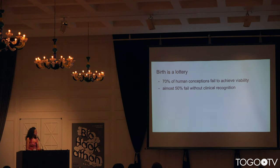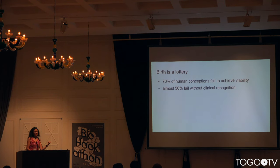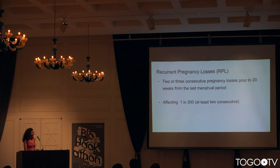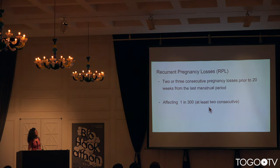Despite what you might think, most conceptions fail to achieve viability. About 70% of conceptions fail — though there are confusing data in literature because it's not easy to verify conceptions. And 50% of those 70% fail before a person can realize that conception actually happened. What's even worse is that it's pretty common: one in 300 people has experienced recurrent pregnancy loss, meaning at least two losses in a row.